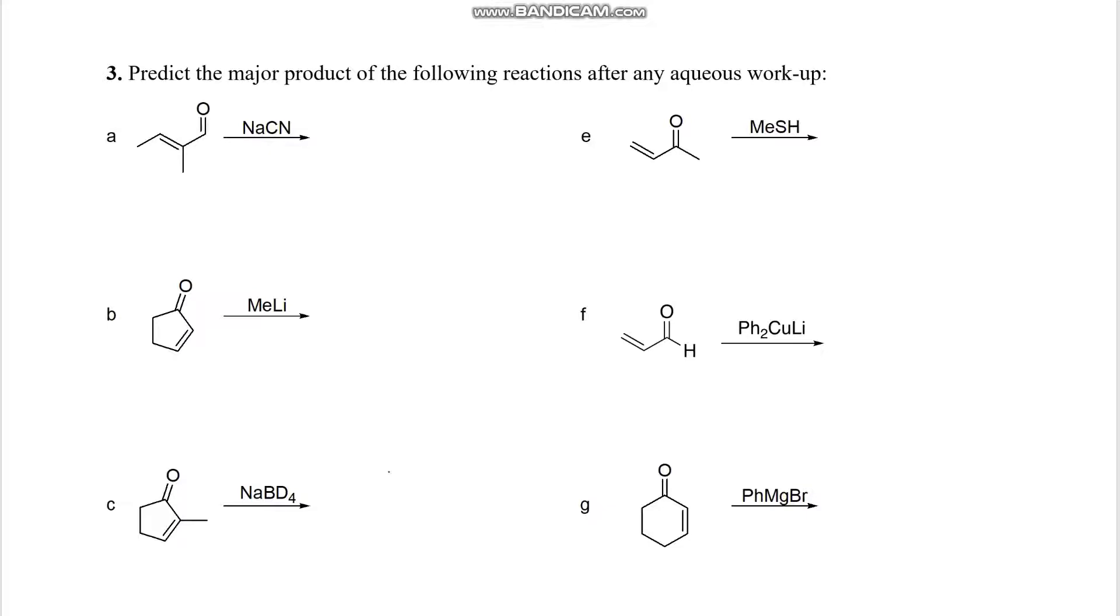For number 3, we are asked to predict the major products for the following reactions after any aqueous workup. So starting with A, we have a cyanide group that will add to the 1-4 position. I simply just break that pi bond and add a cyanide group to it. For E, we have a methane thiol that will add into the 1-4 position.